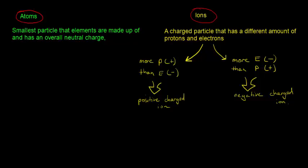An atom is the smallest particle that an element is made up of and has an overall neutral charge, which means atoms always have to have the same amount of protons as electrons. So equal amounts of protons and electrons. For example, if we have helium, and helium has an atomic number of 2, that means helium must have two protons — so two positive charges, because each proton is positively charged.